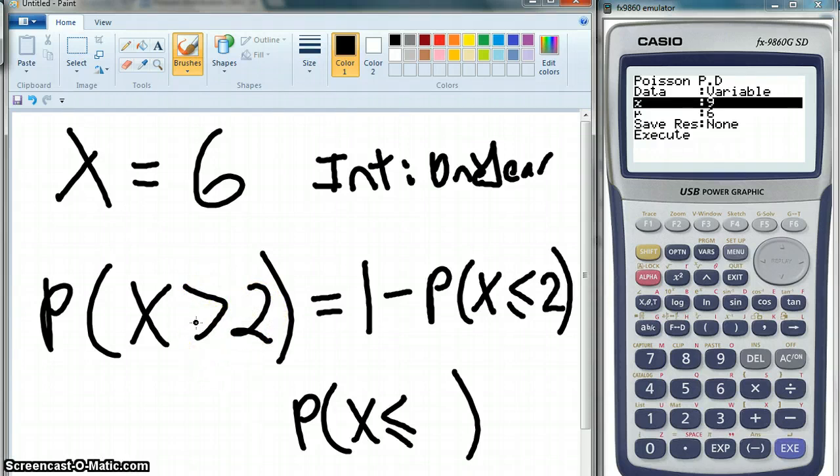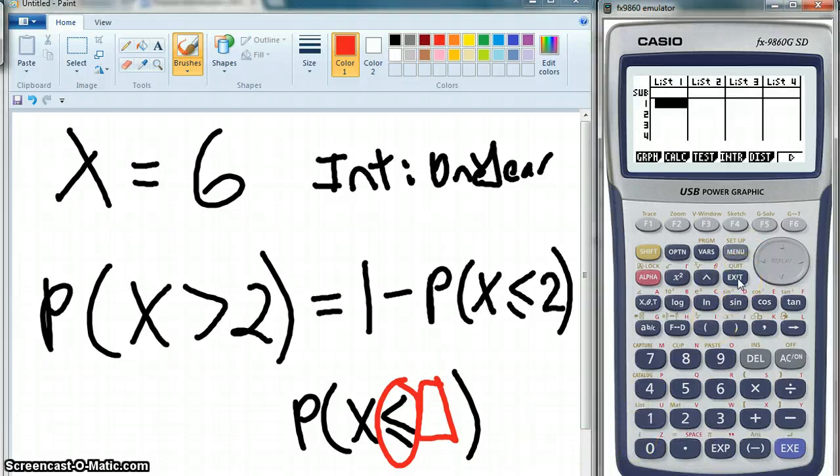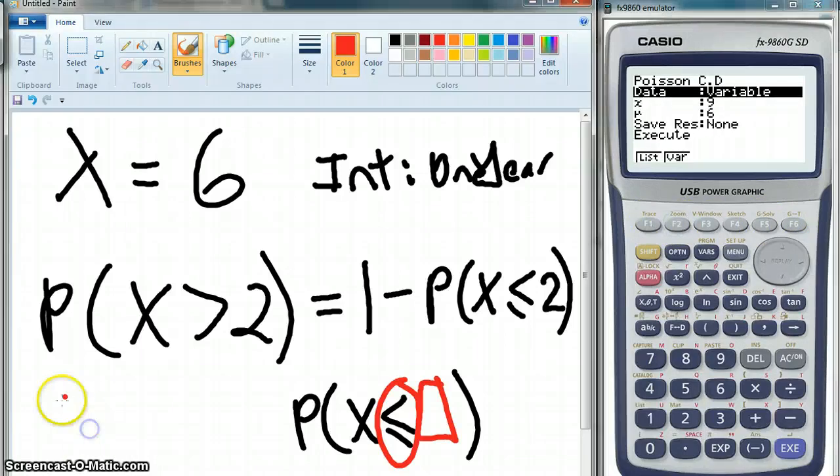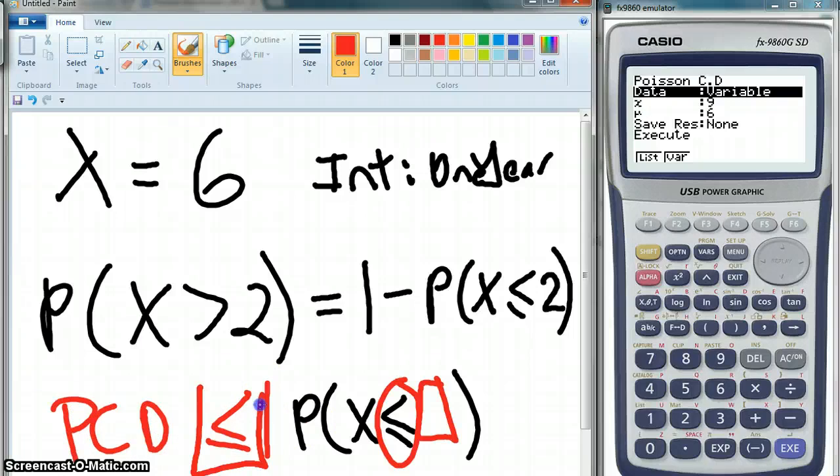So, we do want to have the probability of the three, the four, the five, the six, the seven. So, we're going to go one minus the probability of zero, one, and two. Does that make sense? So, we had to change it to put a number in here, because the calculator, when I go distribution, go across, go Poisson, the PCD is less than or equal to. That's really important.